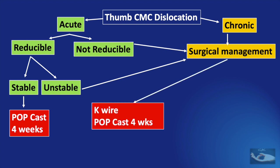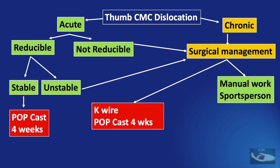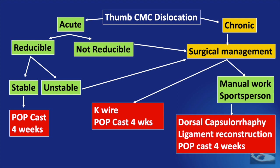In patients with a little instability after reduction, K-wire fixation along with a POP cast for four weeks is ideal. If the patient is involved in manual work or is a sports person, dorsal capsulorrhaphy and ligament reconstruction along with a POP cast for four weeks should be done.